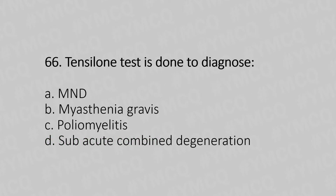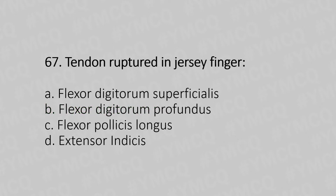Question 66: Tensilon test is done to diagnose — option A: MND, option B: myasthenia gravis, option C: poliomyelitis, option D: subacute combined degeneration. The answer is option B: myasthenia gravis.